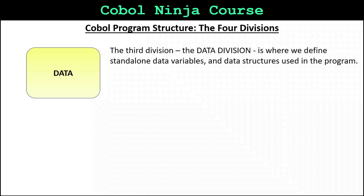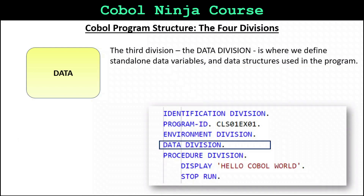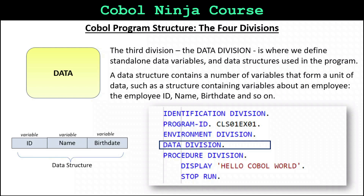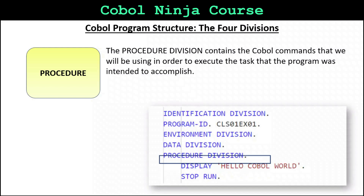The third division, the data division, is where we define standalone data variables and data structures used in the program. A data structure contains a number of variables that form a unit of data, such as a structure containing variables about an employee — the employee ID, name, birth date, and so on.